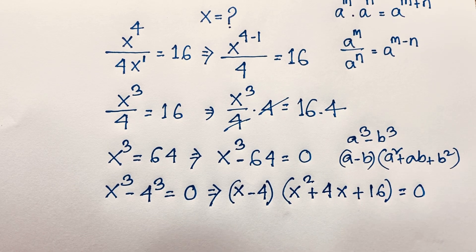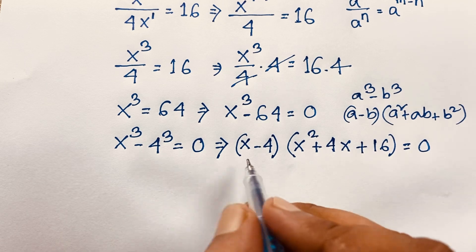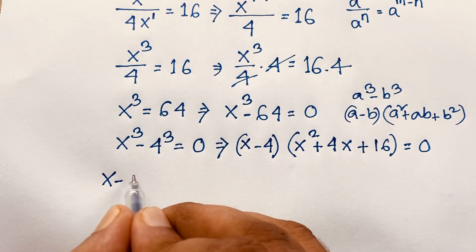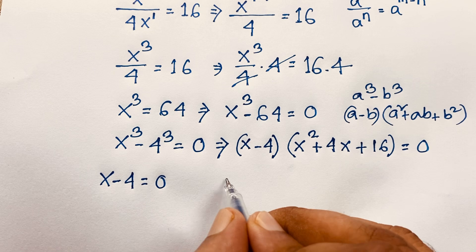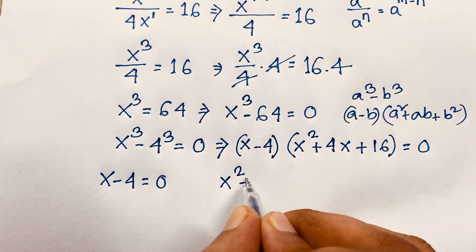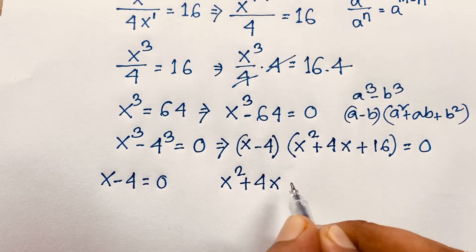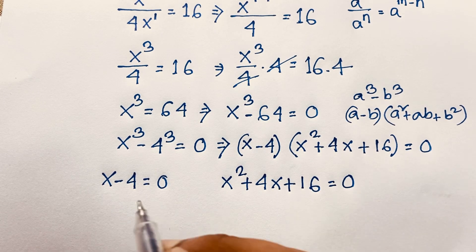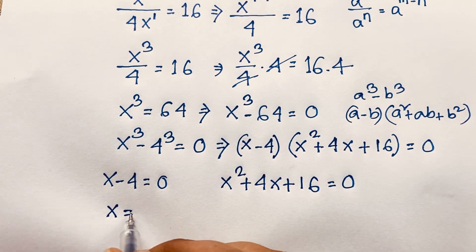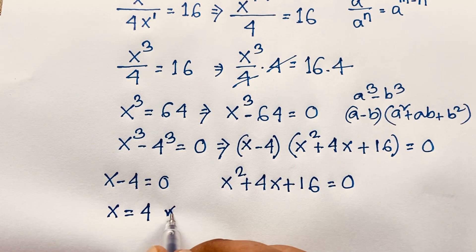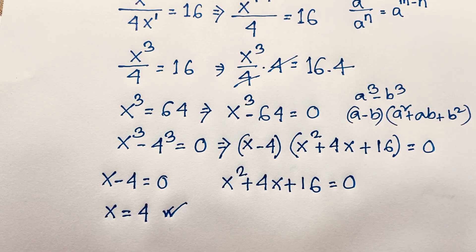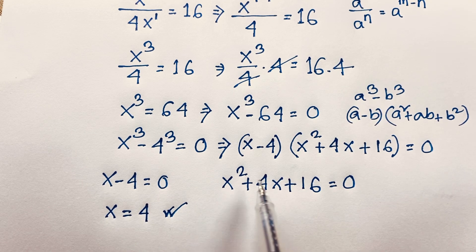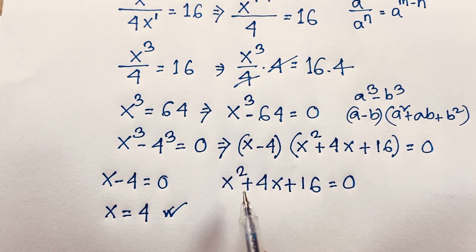So we find two cases. Our first case is x minus 4 equals 0, giving x equals 4. The second case is x squared plus 4x plus 16 equals 0. So x equals 4 is our real solution. But we also have a nice quadratic equation: x squared plus 4x plus 16 equals 0.